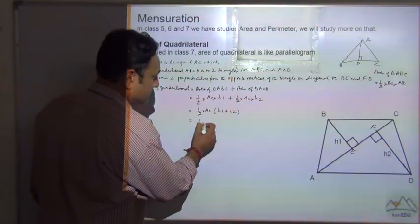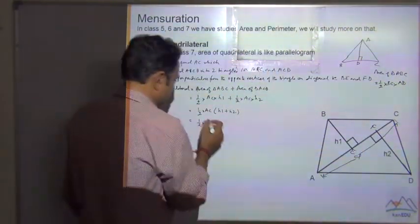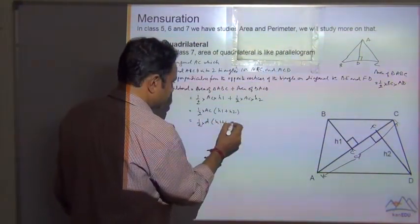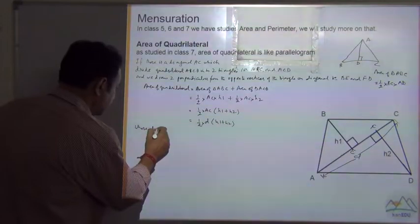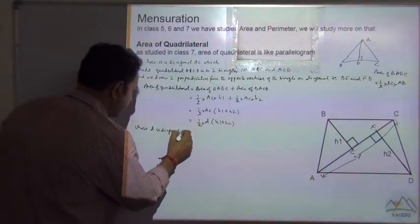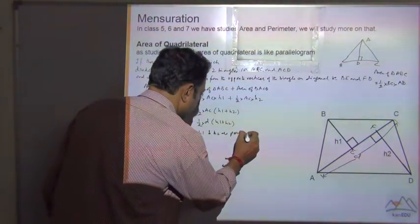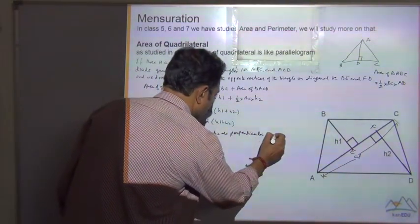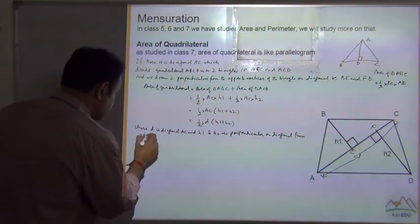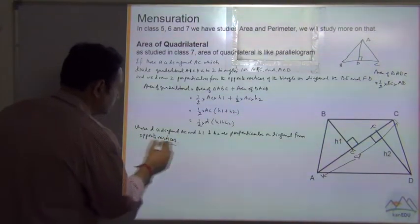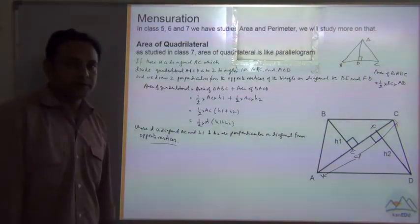So where d AC is the diagonal, so this is equal to 1 by 2 into d into H1 plus H2, where d is the diagonal AC and H1 and H2 are perpendicular on diagonal from opposite vertices.